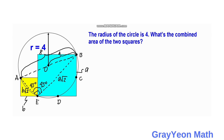We are looking for the combined areas of the two squares. Since the blue square has side A and the yellow square has side B, the total area we are looking for is A squared plus B squared.